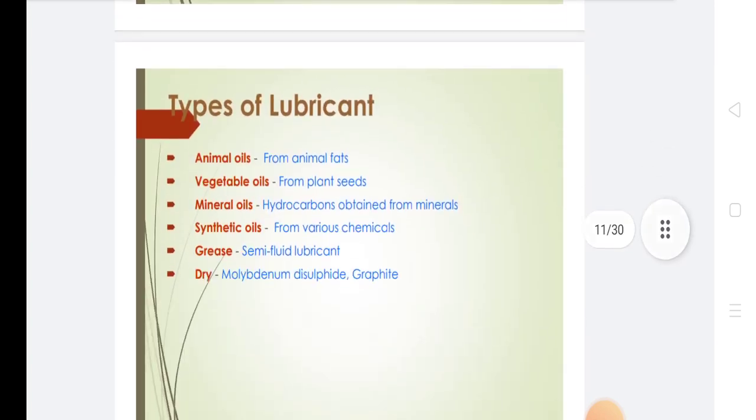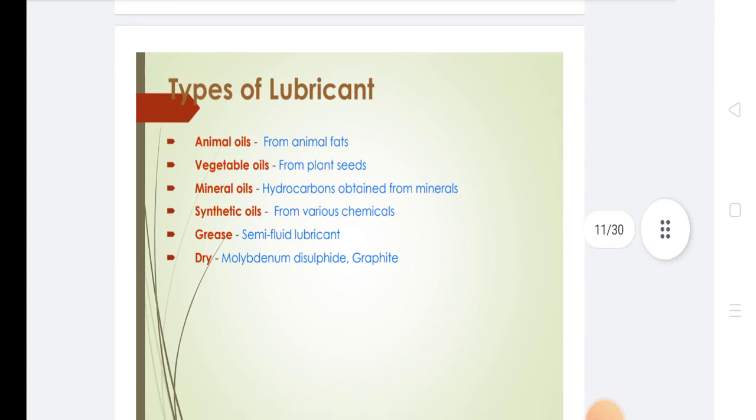Types of lubricant: animal oils from animal fats, vegetable oils from plant seeds, mineral oils from hydrocarbons obtained from petroleum, synthetic oils, grease, and dry lubricants like graphite.